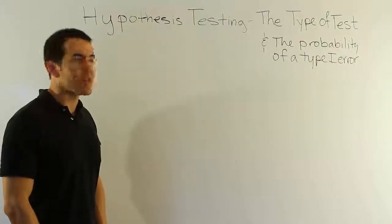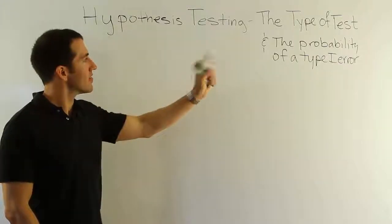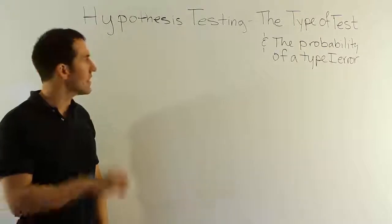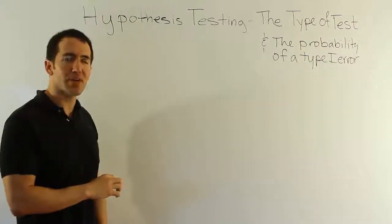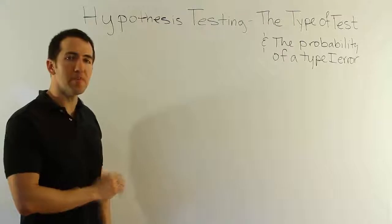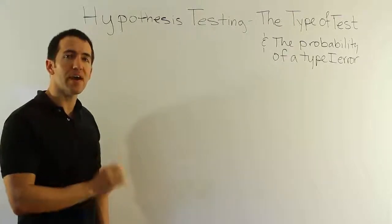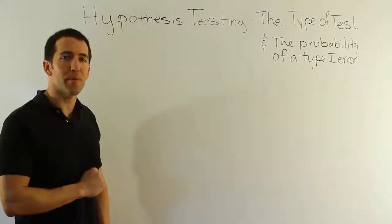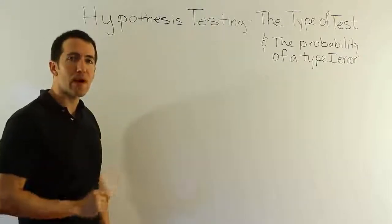In this video we're talking about hypothesis testing still, and now we're talking about the type of test and the probability of a Type 1 error. In the last video where we discussed the critical value, I left off by saying the probability of a Type 1 error in that problem was at most the 2.5% alpha that we chose for the problem.